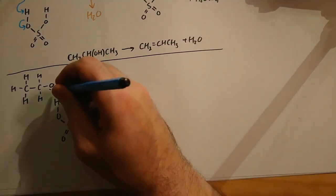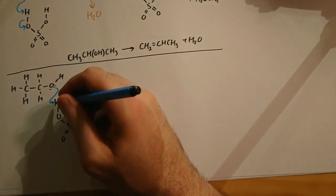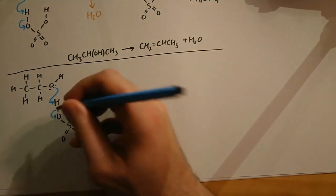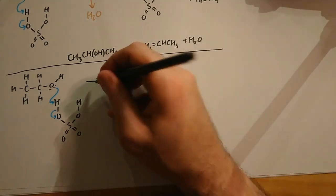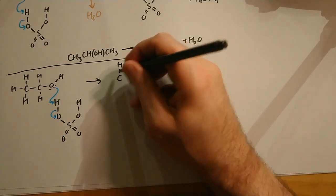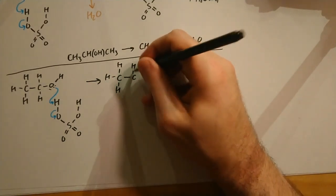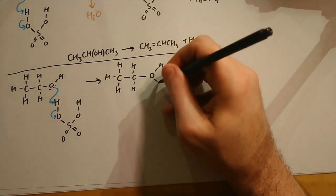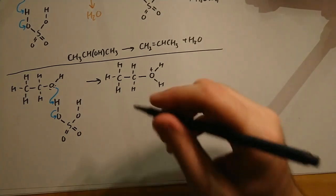So it starts exactly the same: lone pair to the hydrogen. The hydrogen is going to be taken off of the acid because it's an acid, a proton donor, and we'll make a hydrogen sulfate ion in exactly the same way we did before. However, this time we have this intermediate stage with the positive oxygen.